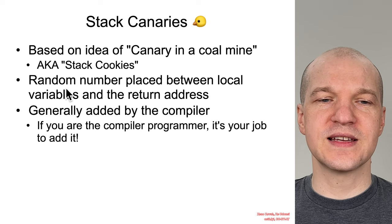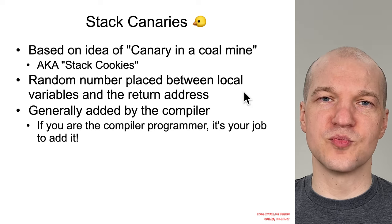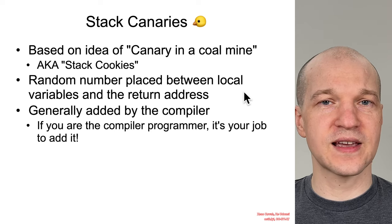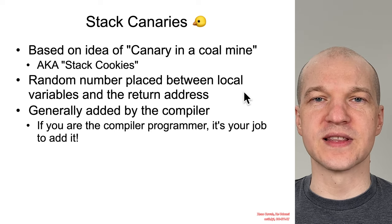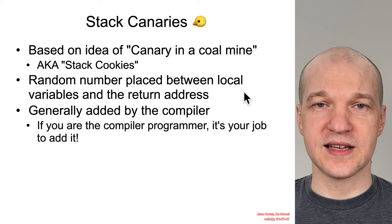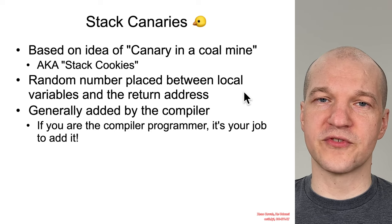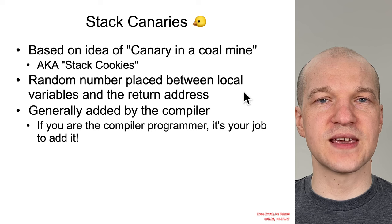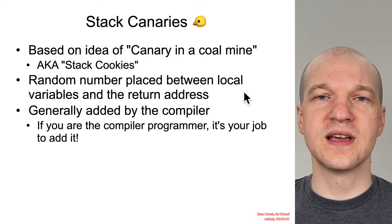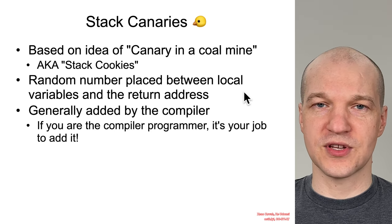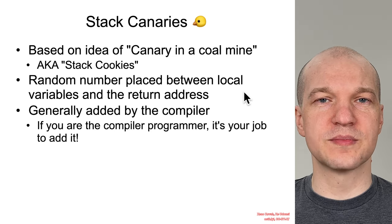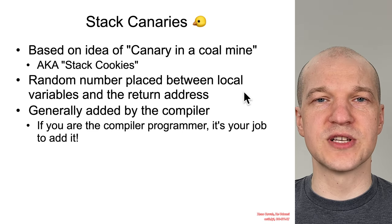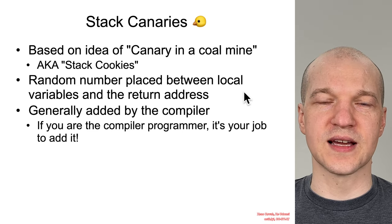The idea is that you take a random number and place it between the local variables on the stack and the return address on the stack. Before you return from a function, you check that random number — is it still uncorrupted? If so, great, return. But if it is corrupted, you should not use the return address because it could have been subject to a stack buffer overflow.